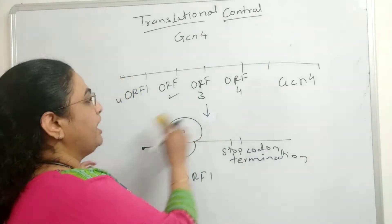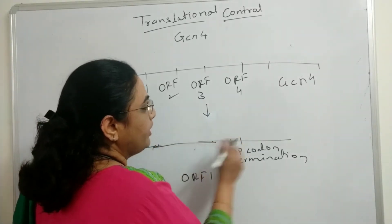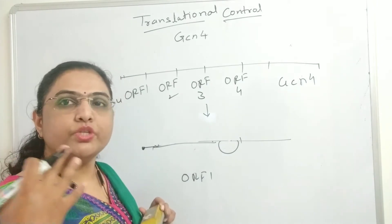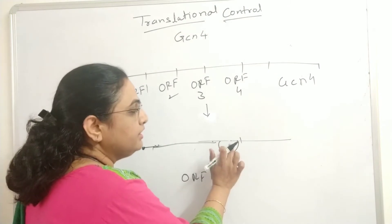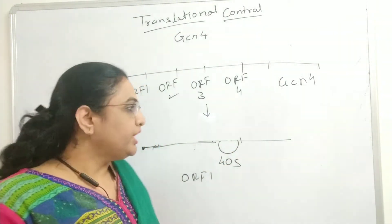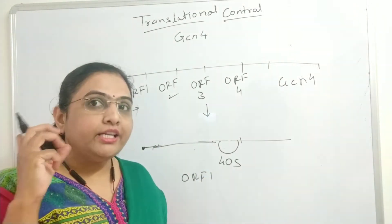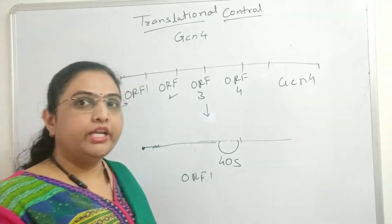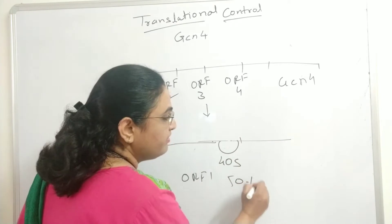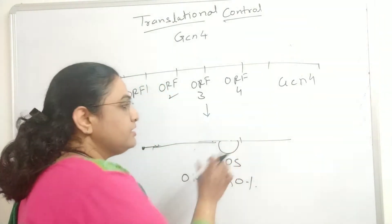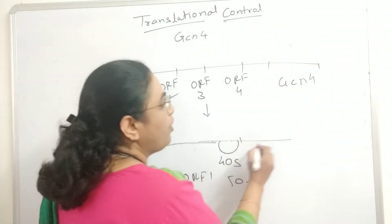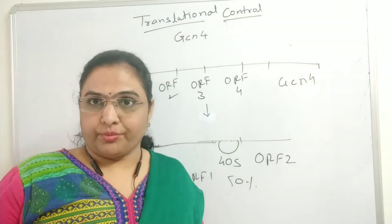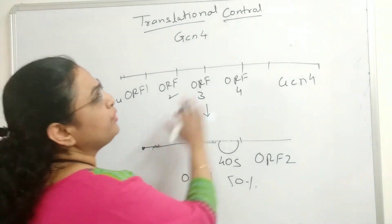After termination at the stop codon of ORF1, the 60S subunit dissociates, the tRNA is released, and the peptide is released. However, the 40S subunit of the ribosome is retained over the mRNA — this is particular to the ORF1 termination codon. About 50% of ribosomes are retained over the mRNA, and this 40S subunit can then travel further into ORF2, ORF3, ORF4, or even toward GCN4.